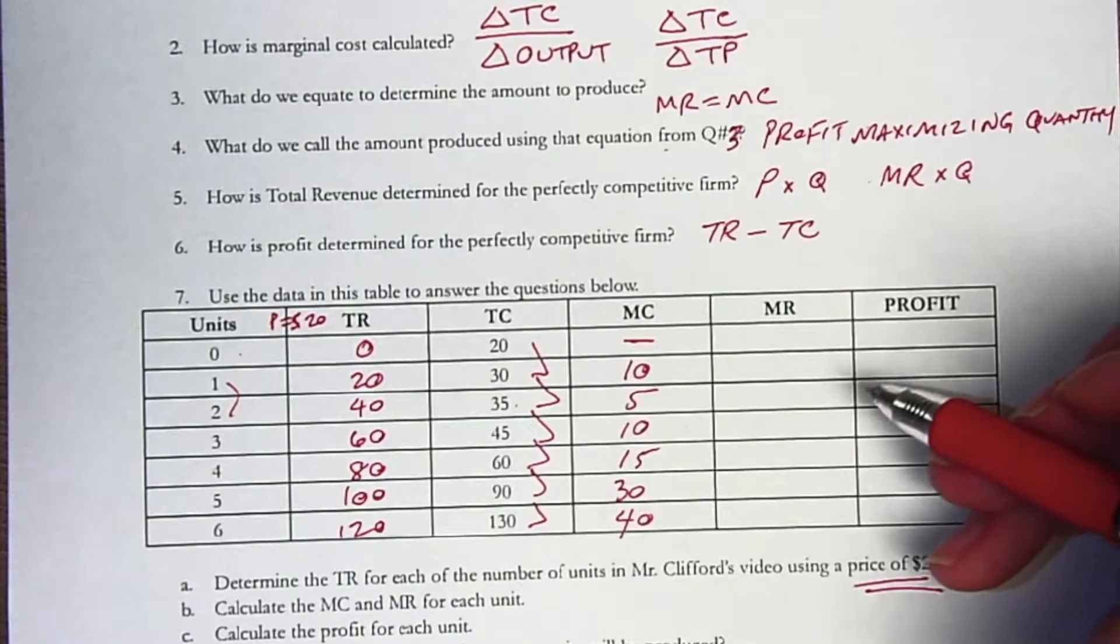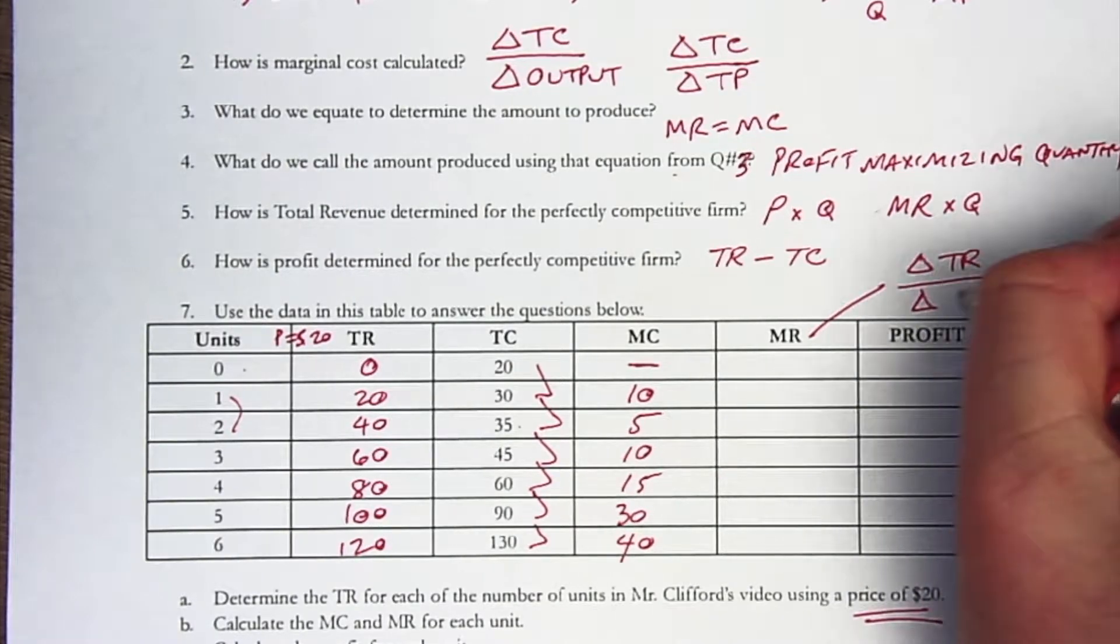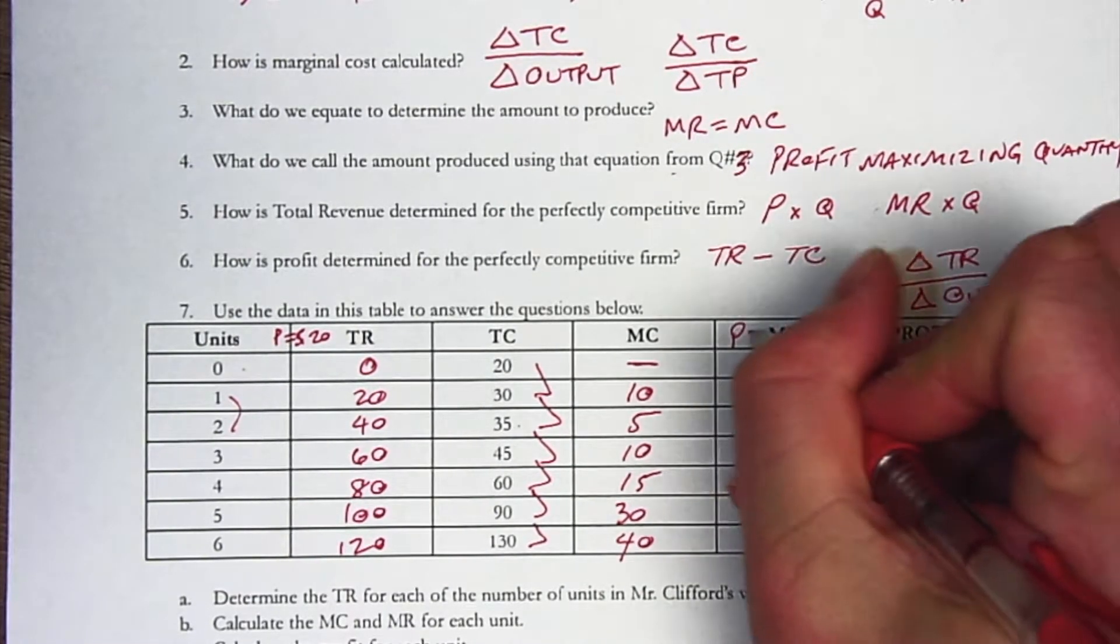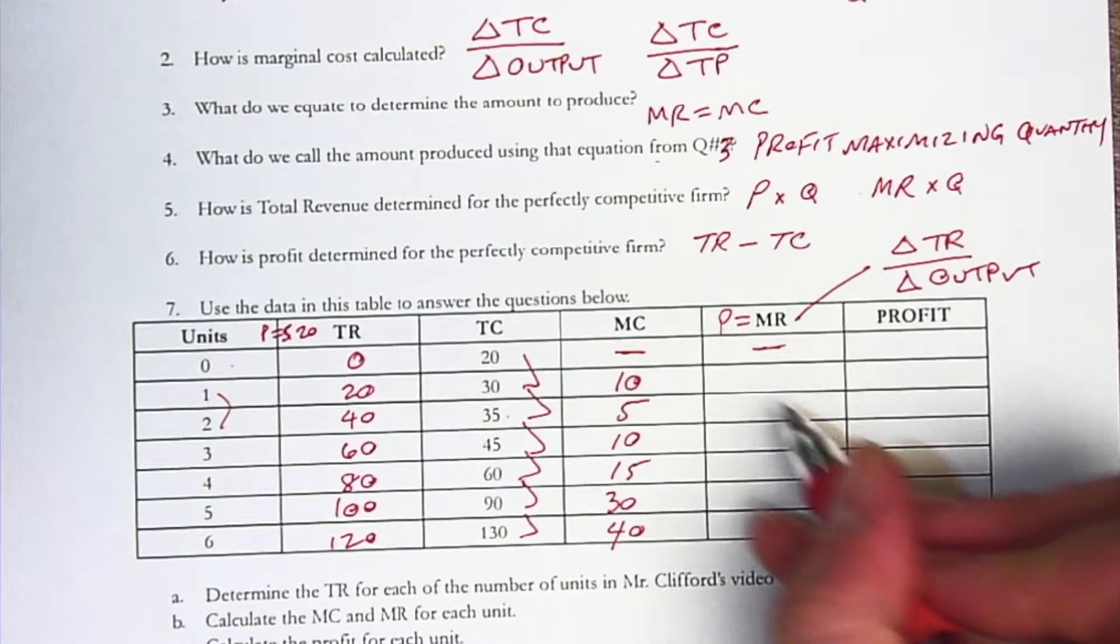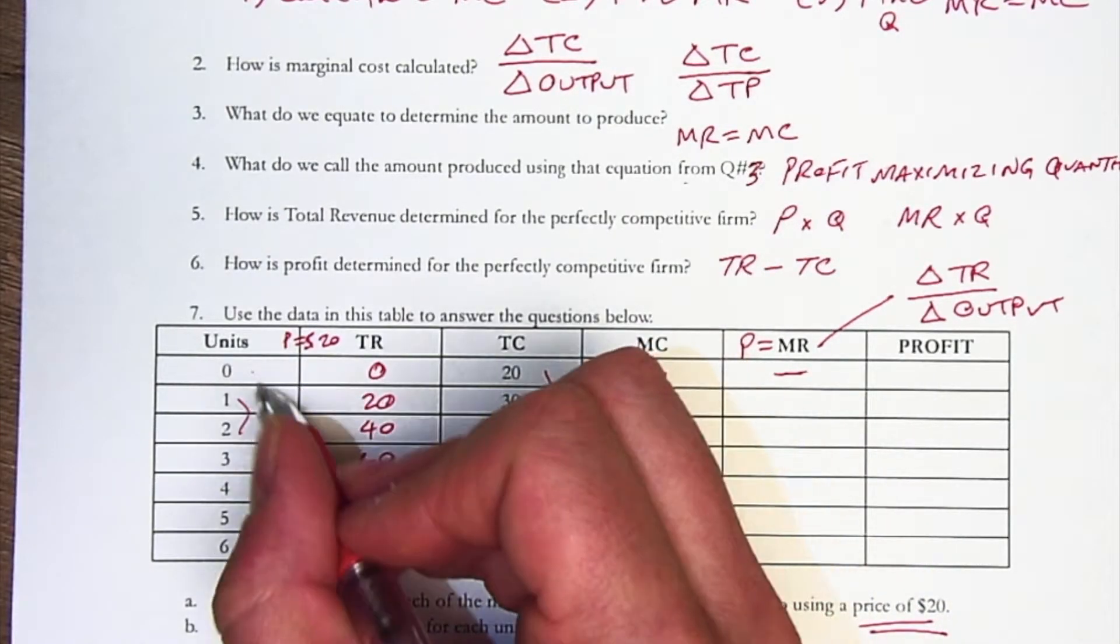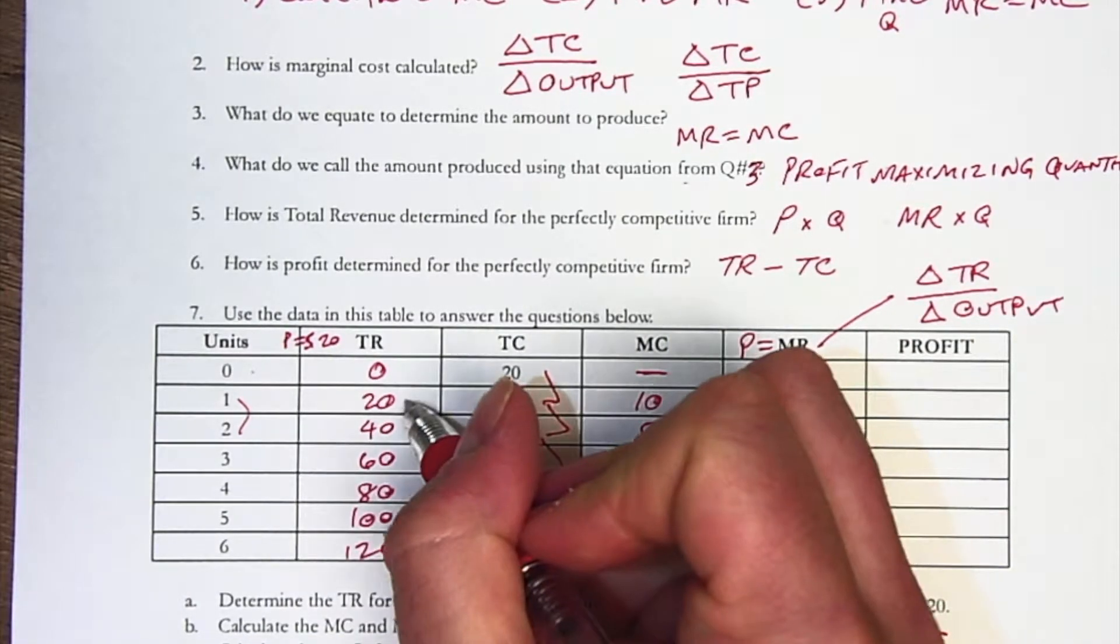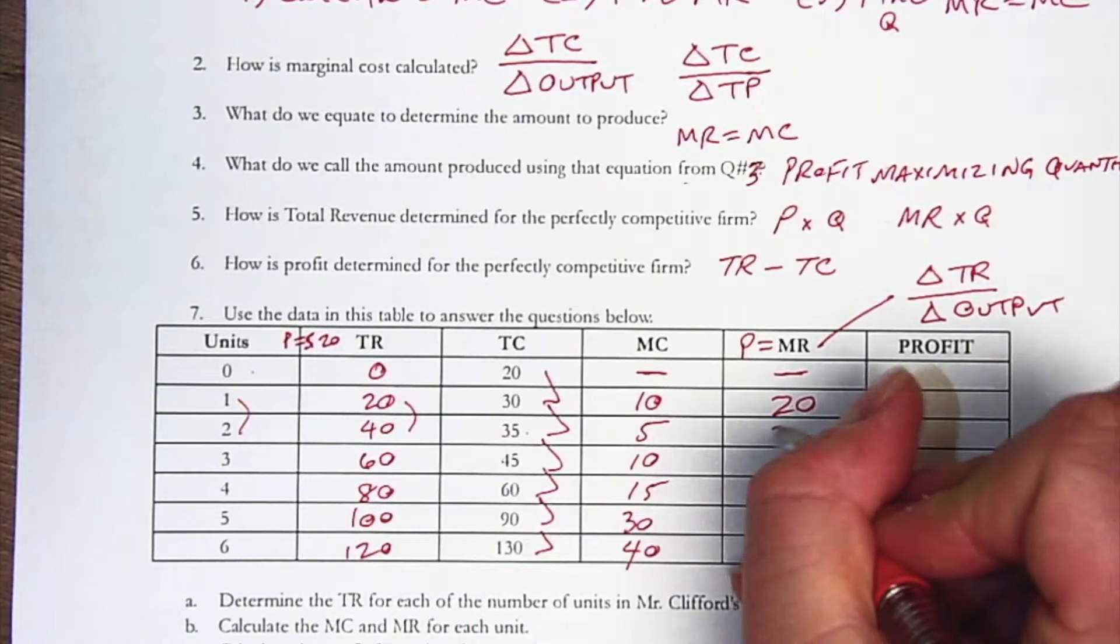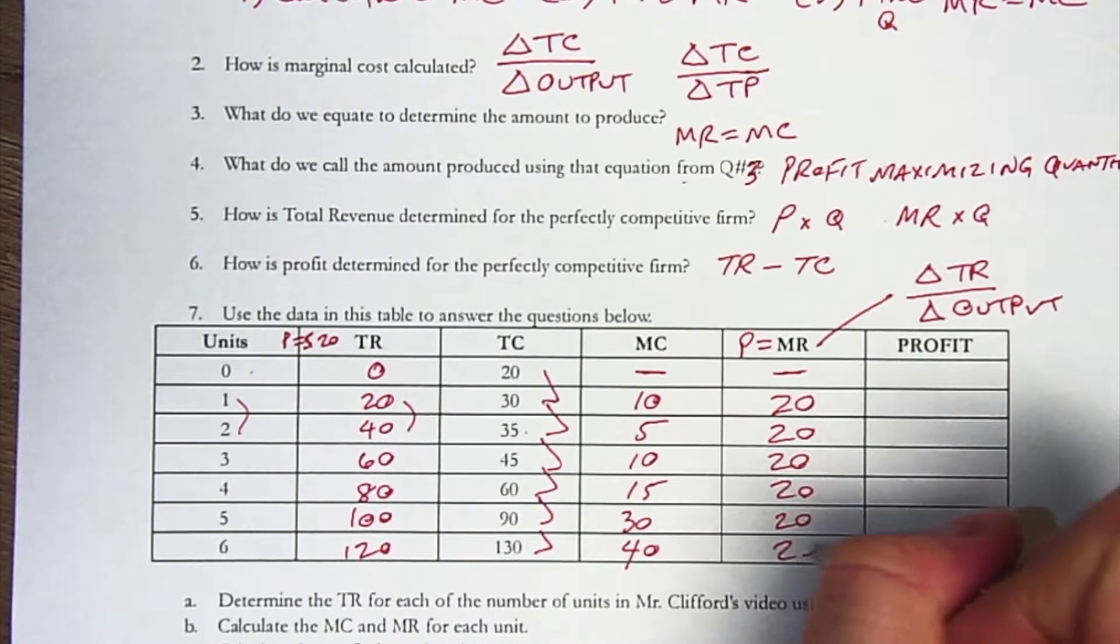Now, marginal revenue. One way to think about marginal revenue is the change in total revenue divided by the change in output. We also know that marginal revenue is just equal to the price for this firm. Let's look to see that this is actually true. The marginal revenue doesn't exist for the zeroth unit. But for the first one, the change in total revenue goes from 0 to 20, that's 20 in the numerator. And the denominator is 0 to 1, that's 1, so 20 over 1 is 20. For the second one, the change here is 20 to 40, that's 20 over 1, which is 20. So it's the change in total revenue over the change in output, but it's also just equal to the price.